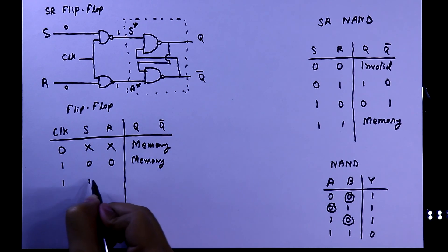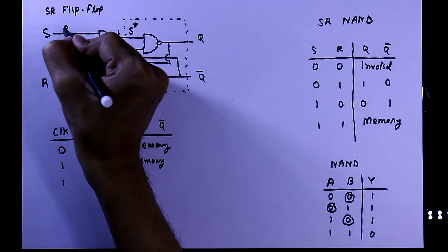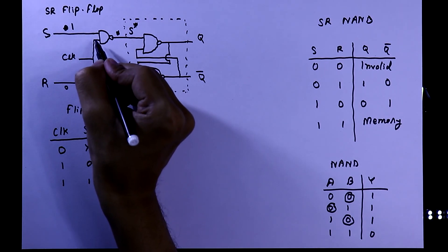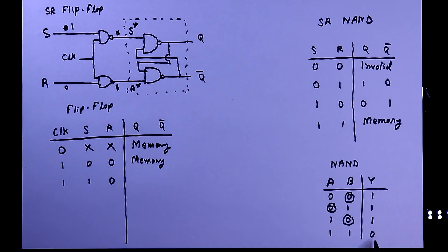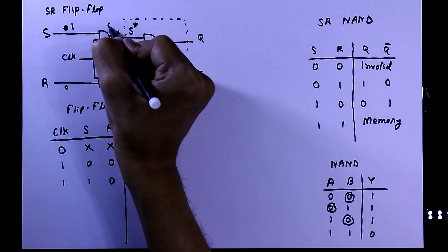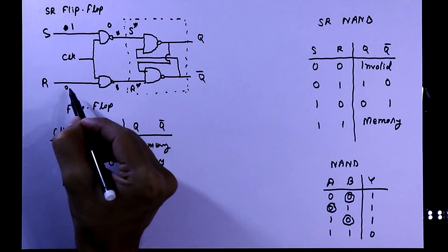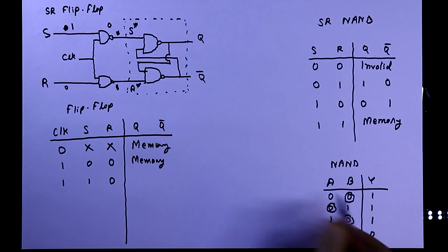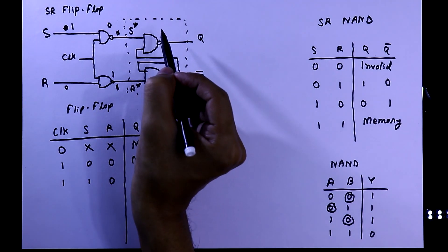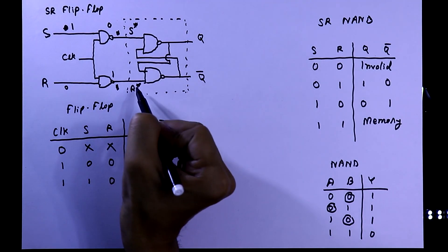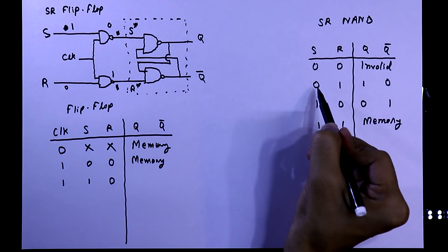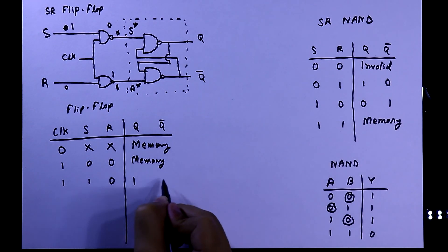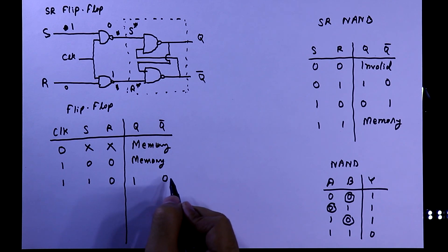Clock is one, S is one, R is zero. Clock is one and S is one, so both inputs of that NAND gate are one, and we will get zero in the output. Clock is one and R is zero — one zero input means the output will be one. In the SR latch, if S equals zero and R equals one, then Q equals one and Q-bar equals zero. So this will be our output.